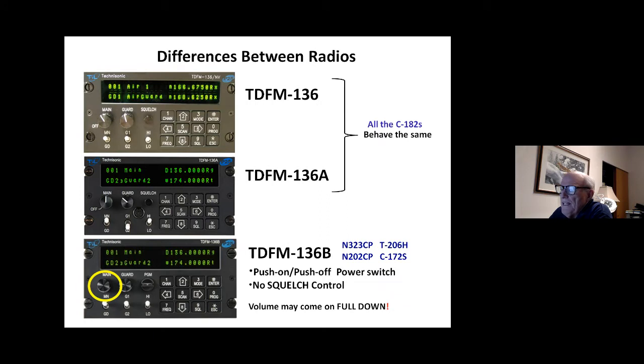Something that is going to help remember a couple of key differences in the radios: all the radios and all the 182s behave exactly alike. The only thing that's different, and there are a couple of key differences that we really need to learn to be able to operate the radio. The 206 and the 172 are a little bit different because the volume control and on-off switch is a push button and not just a rotary control for the on-off switch. And the radio has a nasty habit of coming on when you turn it on with the volume full down.